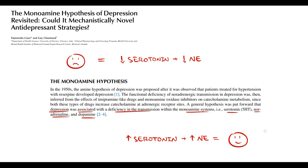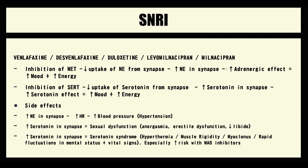Drugs that cause increasing serotonin or norepinephrine in the synapse we call antidepressants. Serotonin-norepinephrine reuptake inhibitors include venlafaxine, desvenlafaxine, duloxetine, levomilnacipran, and milnacipran. Serotonin-norepinephrine reuptake inhibitors have two mechanisms of action: first of all, they inhibit the norepinephrine transporter.